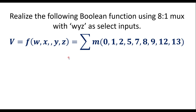In this video, I will consider one example to implement a boolean function using an 8-to-1 MUX. Realize the following boolean function using an 8-to-1 MUX with w, y, z as select lines. The function f(w, x, y, z) is given and these are the values where the output is 1.